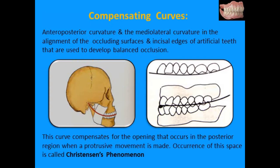The final factor is the compensating curve. GPT defines it as the anterior-posterior curvature and medial-lateral curvature in the alignment of occluding surfaces and incisal edges of artificial teeth, used to develop balanced occlusion. These are artificial components of curves present in natural dentition — the curve of Spee, curve of Monson, etc. These curves compensate for the posterior opening that occurs on protrusion, known as Christensen's phenomenon, by maintaining posterior tooth contact.